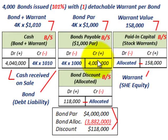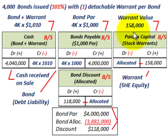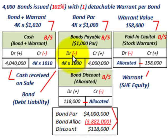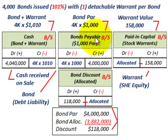Checking our debits and credits: debits include cash of $4,040,000 and bond discount of $118,000, totaling $4,158,000. Credits include bonds payable of $4,000,000 and paid-in capital warrants of $158,000, also totaling $4,158,000 — they balance. This completes the proportional method allocation at issuance of a bond with a detachable stock warrant, used because we knew the separate selling prices of both securities.